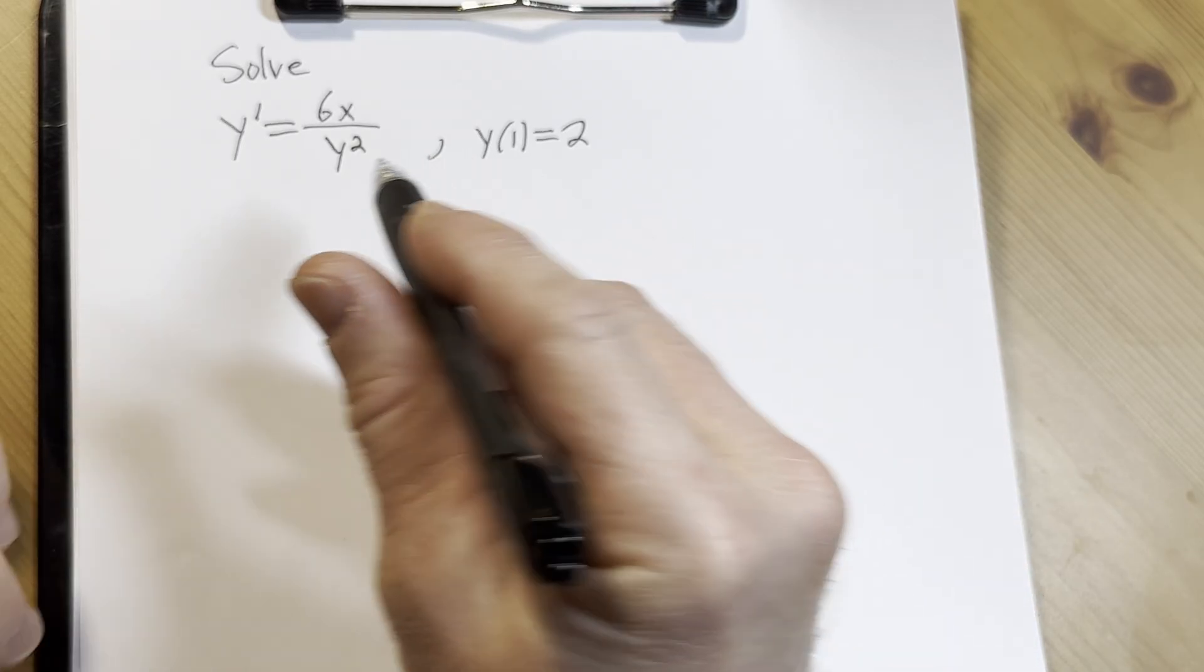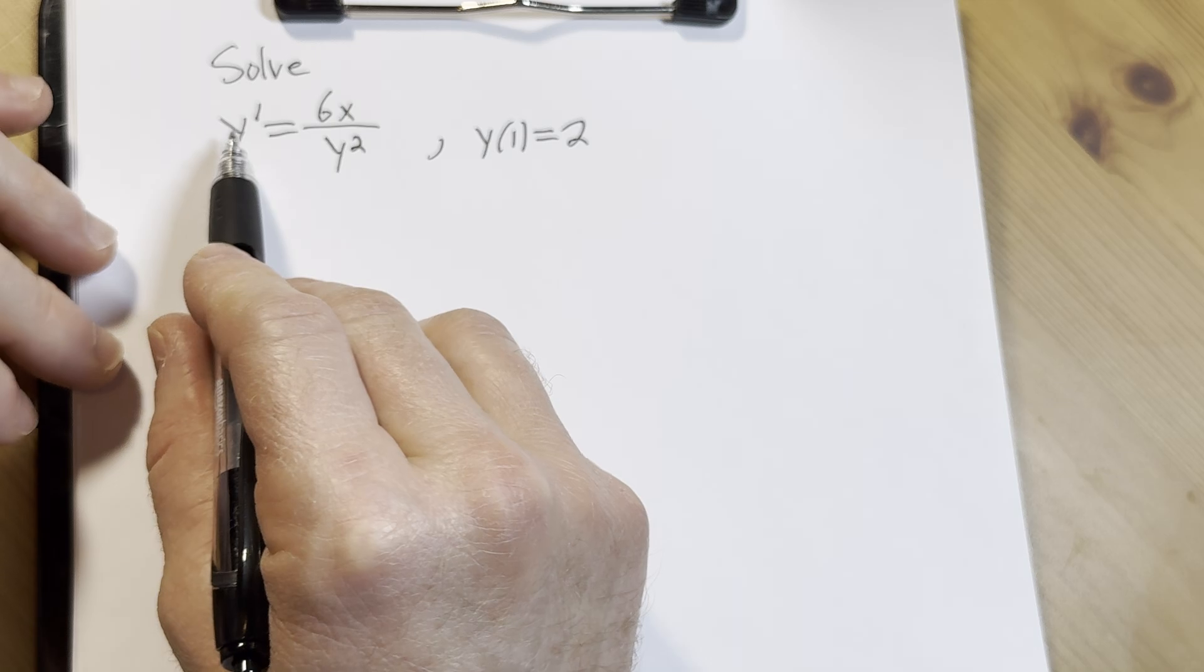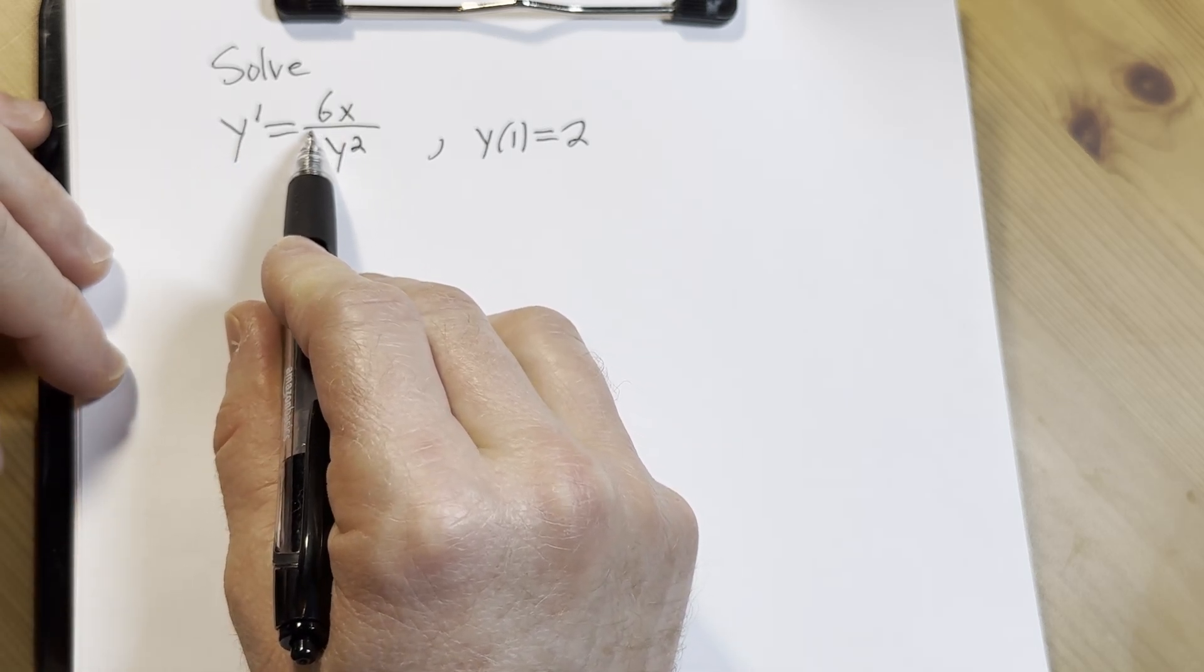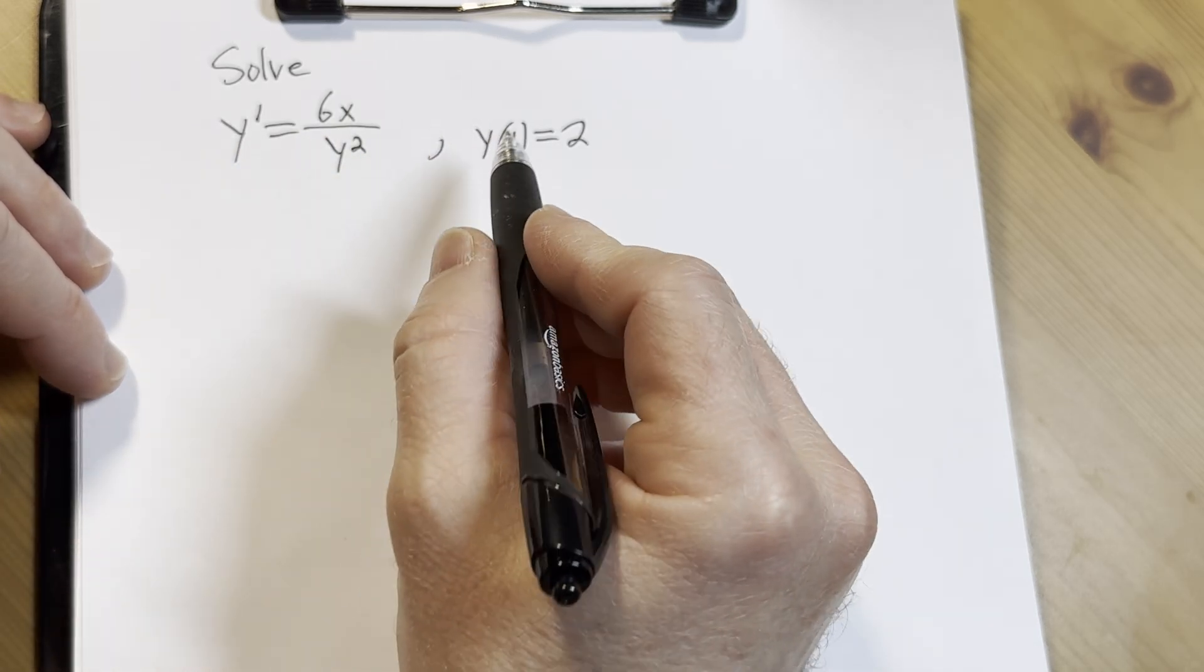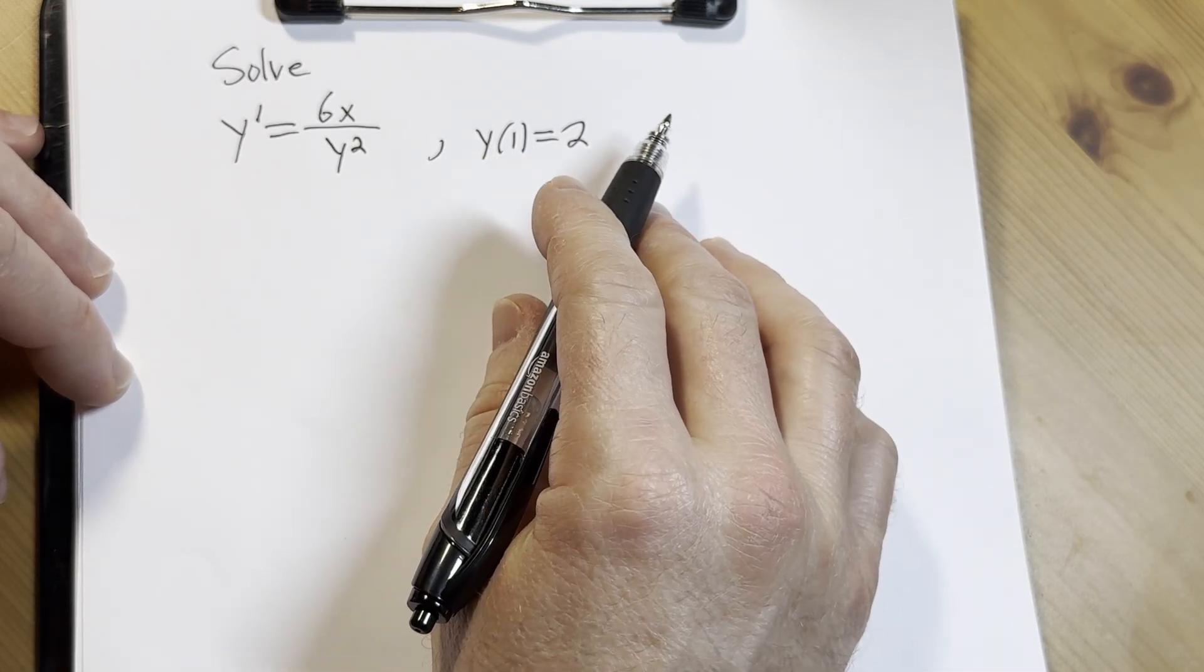Hi, in this video we are going to solve a simple differential equation. The question is to solve y' equals 6x all divided by y squared with this initial condition y of 1 equals 2.